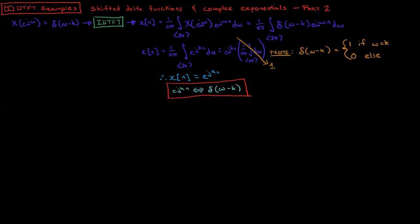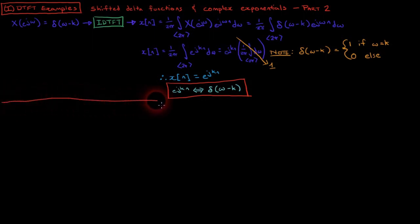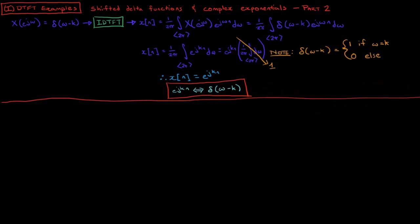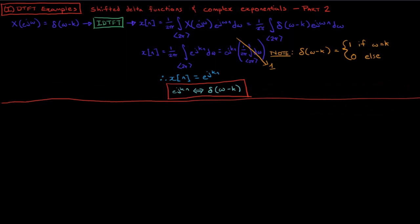Note the symmetry of this pair with the pair we derived in Part 1. This is often referred to as reciprocity, although it is in a very weak form and not a mathematical definition. Reciprocity will play a much larger role once the discrete Fourier transform is introduced.